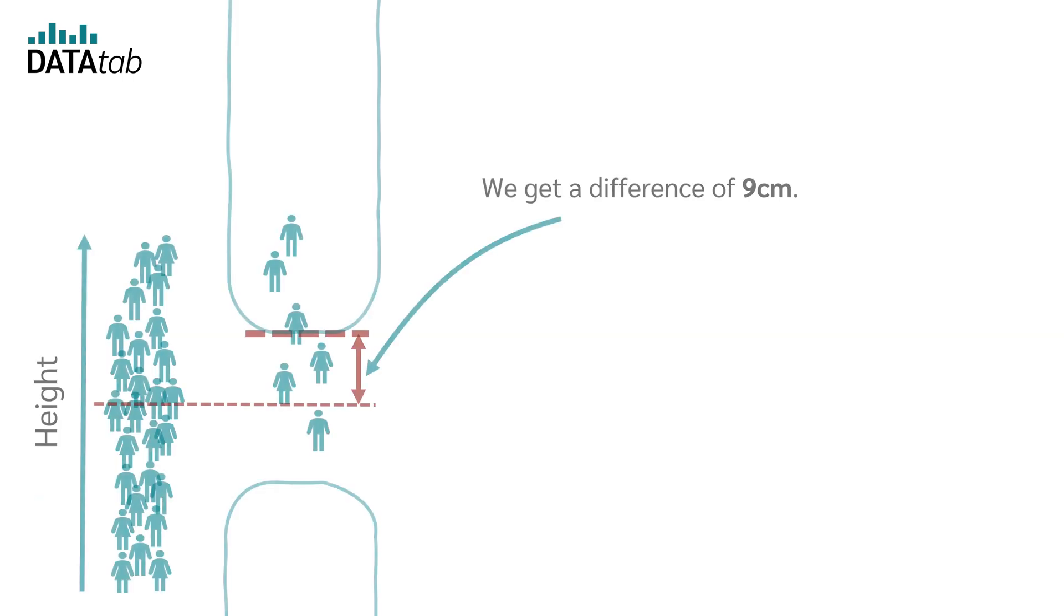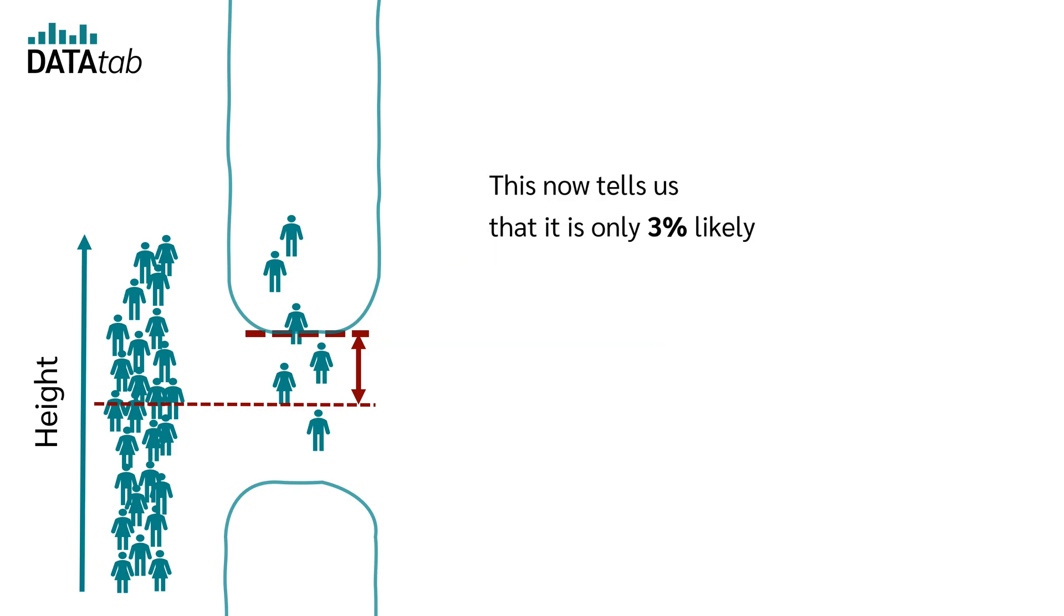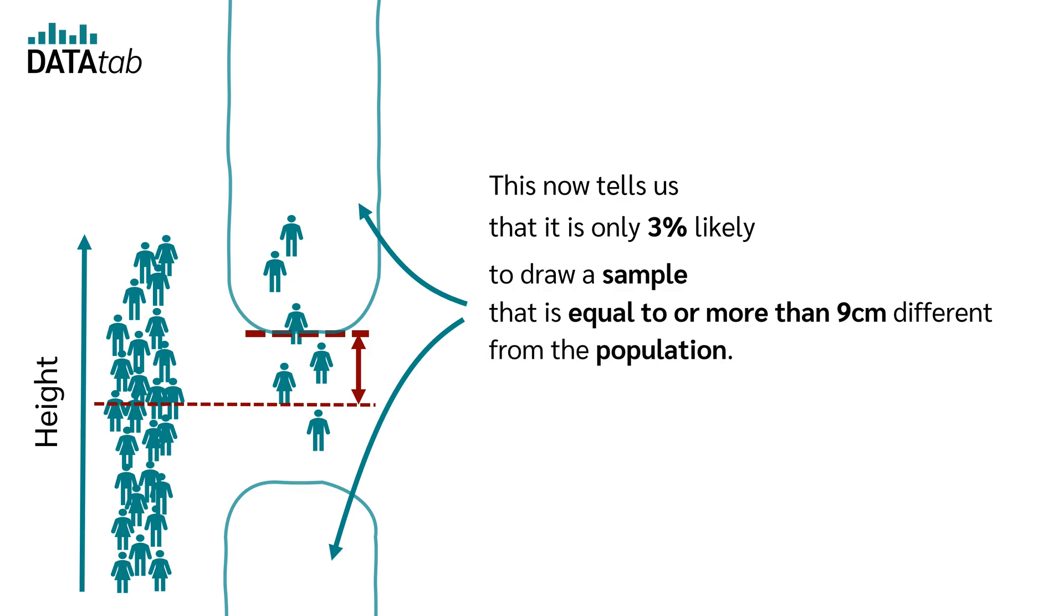An example: we get a difference of 9 centimeters, and our favorite statistic software, e.g. DataTab, calculates a p-value of 0.03, i.e. 3 percent. This now tells us that it is only 3 percent likely to draw a sample that is equal to or more than 9 centimeters different from the population.